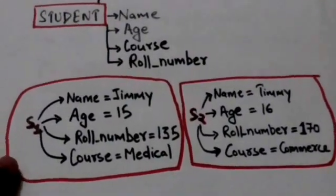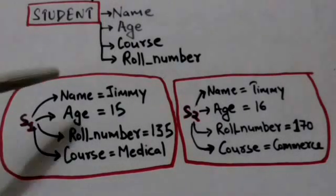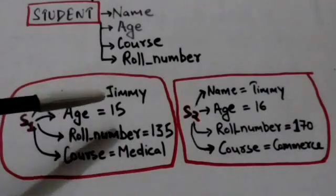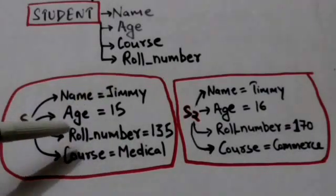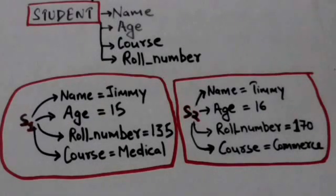For example, there is a student entity s1. Value of its name attribute is Jimmy, value of its age attribute is 15, value of its roll number attribute is 135, and value of its course attribute is medical.